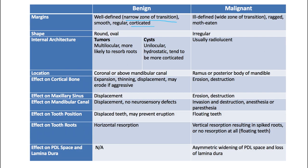For benign lesions, the shape will tend to be more round or oval. Malignant lesions are going to be more irregular. For internal architecture, tumors tend to be more multilocular with multiple compartments and are more likely to resorb the roots of teeth, whereas cysts are going to be more unilocular, hydrostatic — meaning expansile — and tend to be more corticated. Both tumors and cysts are benign lesions here, but it's a helpful way to distinguish between these two sometimes hard-to-distinguish benign lesions.